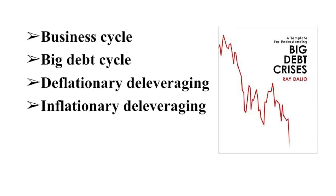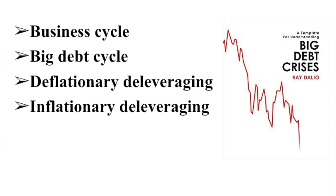His studies enabled him to create the archetypal — the typical model — for each important situation: the business cycle, the big debt cycle, deflationary deleveraging, and inflationary deleveraging. The main point is to differentiate between what's going on in the long term in the economy: what are the forces driving the economy, how do politicians behave, how do monetary policyholders behave?